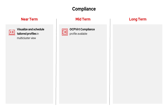OpenShift virtualization is now a reality, and earlier this year Red Hat released the first OpenShift virtualization hardening guide. A new profile based on that guide will be available in the compliance operator, and ACS customers will be able to automatically assess and continuously monitor their OpenShift virtualization environments against it. And in the long term, we want ACS to enable customers to trigger multi-cluster remediation automatically, directly through ACS.